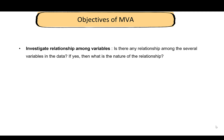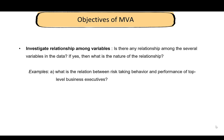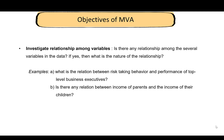Another objective is to investigate relationships among variables — if you collect several variables, is there any relationship between them, and what is the nature of that relationship? In linear regression, for example, we study whether there is a relationship between the response and predictor variables. Other examples include studying risk-taking behavior and performance of top-level business executives, or the relationship between parents' income and their children's income.